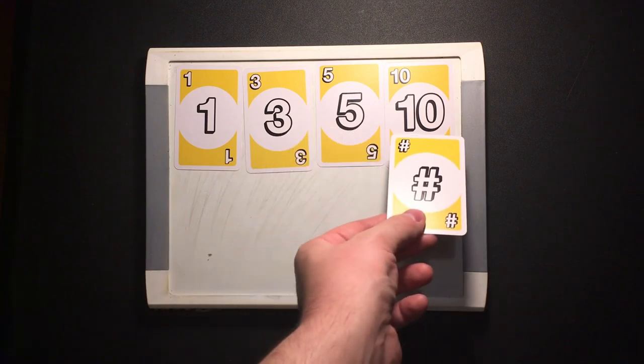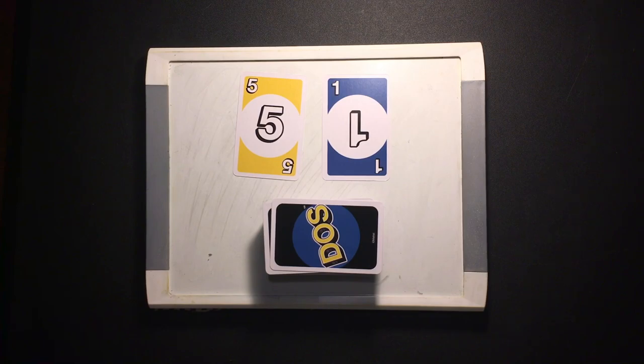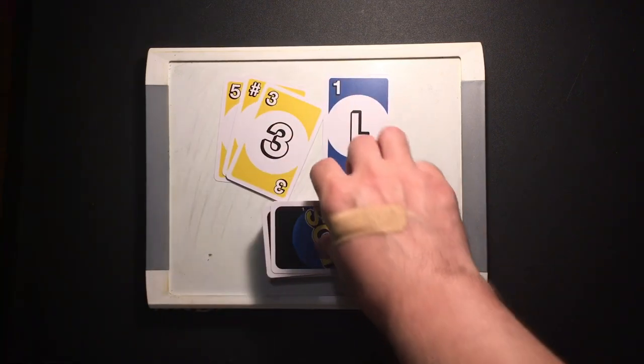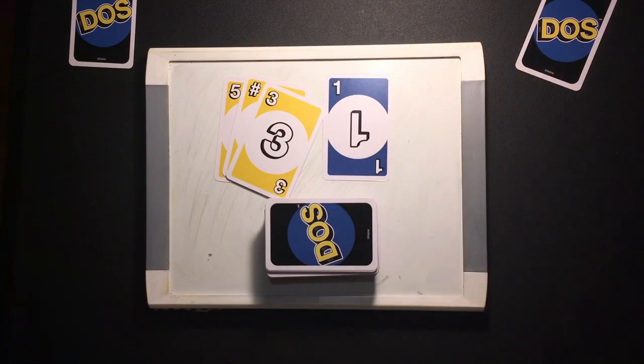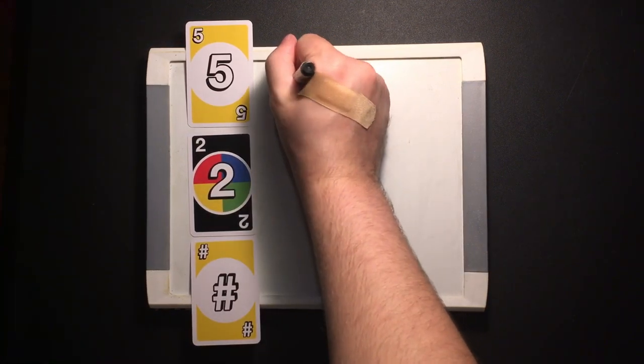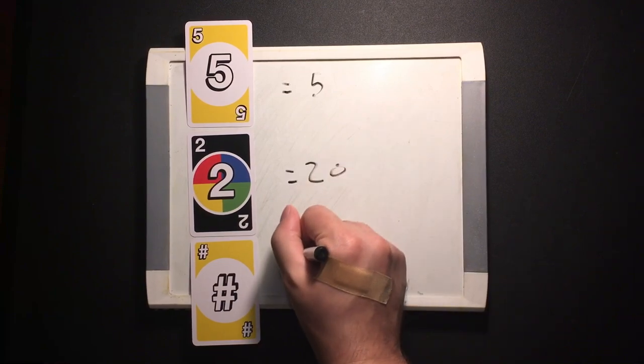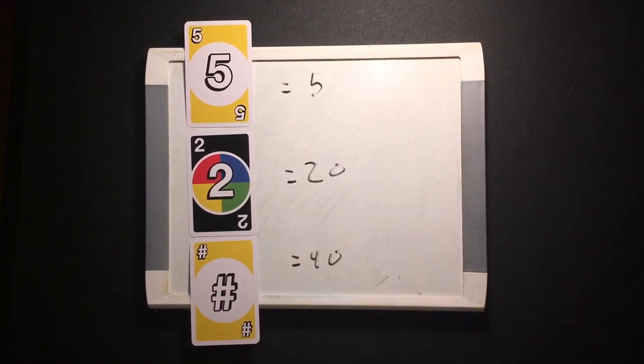Finally, scoring. When the round ends, all of the players that still have cards must draw any bonus cards the winning player earned that turn. Then you count all of the cards left in all of their hands like so. All number cards are worth their face value. Wild DOS cards are worth 20 points and wild hashtag cards are worth 40 whole points. Add them up and write it down somewhere so that you can see.